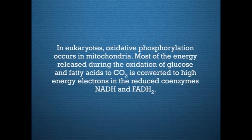Most of the energy released during the oxidation of glucose and fatty acids to carbon dioxide is converted to high energy electrons in the reduced coenzymes NADH and FADH2. The energy transiently stored in these reduced coenzymes is converted to a proton motive force by the electron transport chain, also known as the respiratory chain, found in the inner mitochondrial membrane.